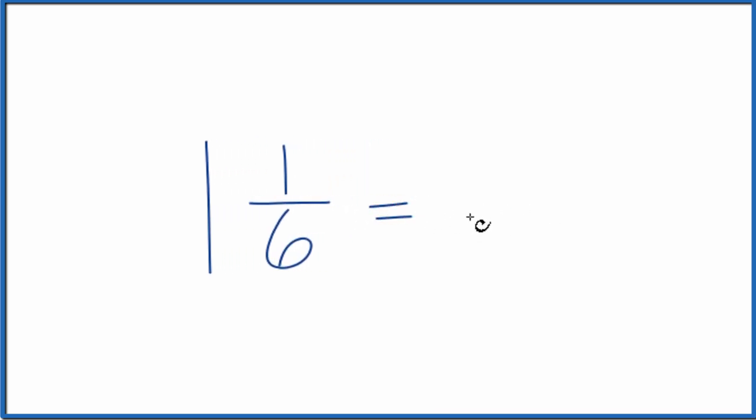To get this to an improper fraction, we want to have a numerator that is greater than our denominator. Here's how we do that: take the whole number 1, multiply that by the denominator 6, then add the numerator 1.